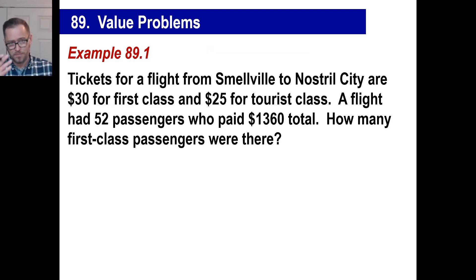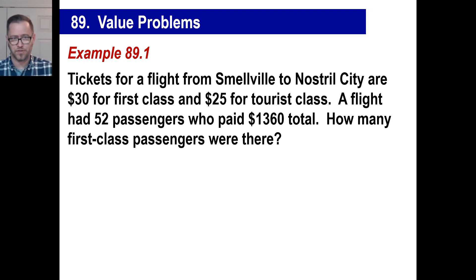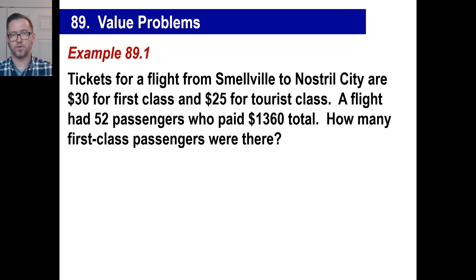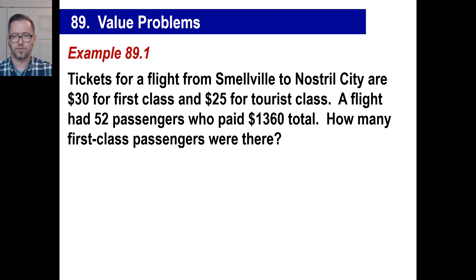Let's do one here. Now we're dealing with tickets. Tickets for a flight from Smellerville to Nostral City are $30 for first class and $25 for tourist class — these are cheap tickets. A flight had 52 passengers who paid $1,360 total. How many first class passengers were there?